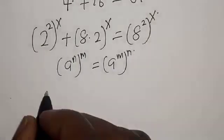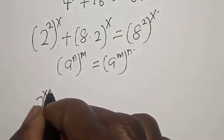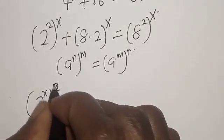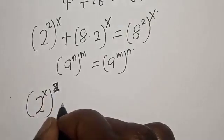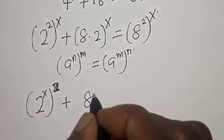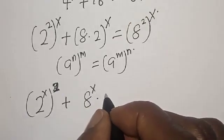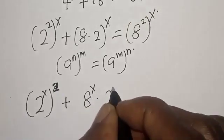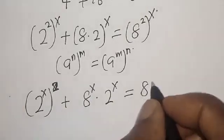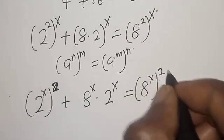Now 2 raised to power s, all squared, plus 8 raised to power x is equal to 8 raised to power s, all squared.